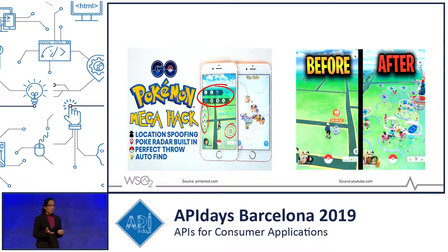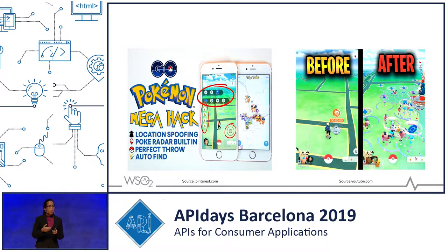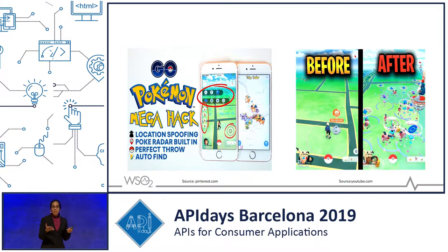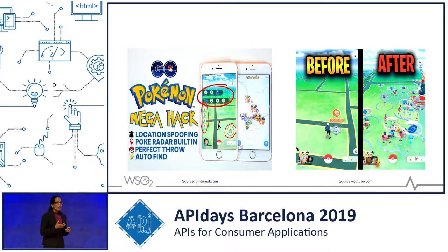So why am I talking about this today? Their initial release was only done for a set of countries, and the game enthusiasts, or rather the players, wanted to figure out how this GPS tracking works, how this backend service really works, and how accurate this functionality is. But Niantic did not have a public API exposed at this time, so they couldn't really find much information about this.